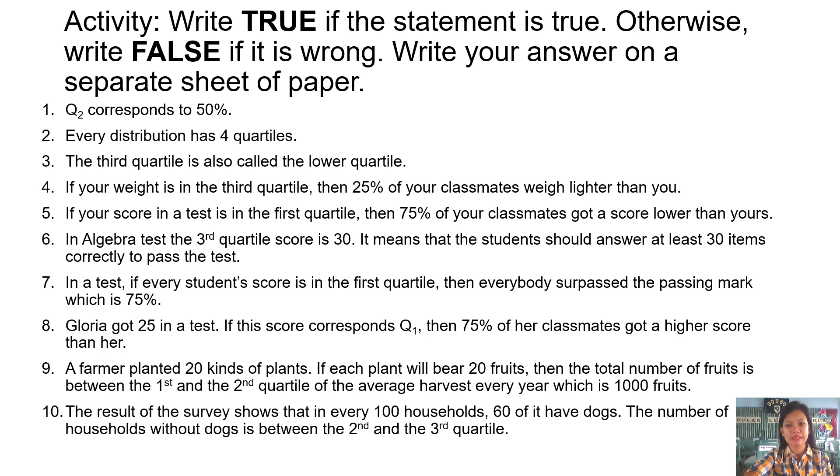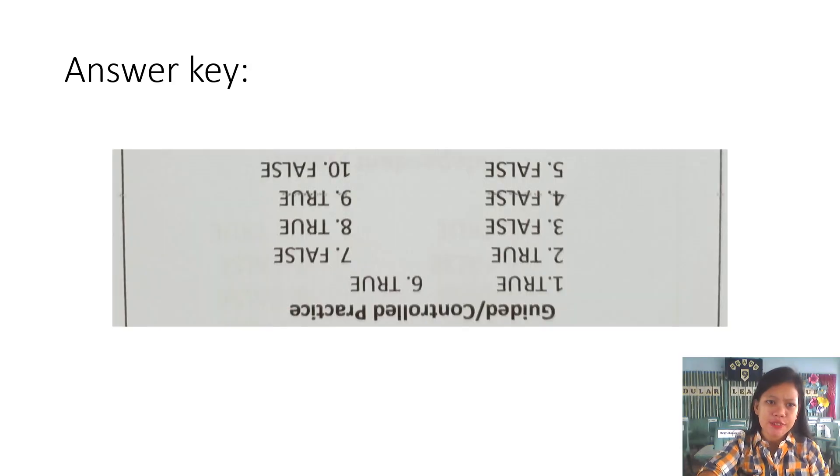These are the answer key for the previous activity. Number one is true. Two, true. Number three is false. Number four is false. Number five is false. Six, true. Seven, false. Eight, true. Nine, true. And ten, false. That's the answer for the previous activity.